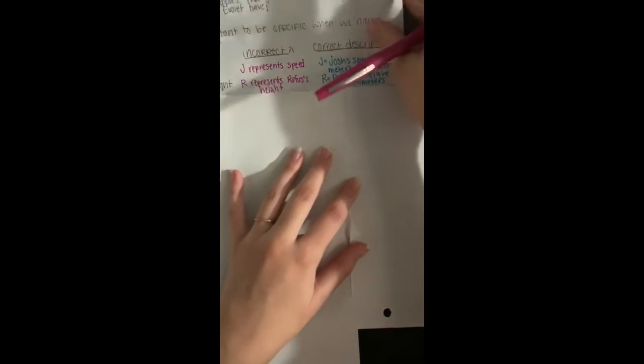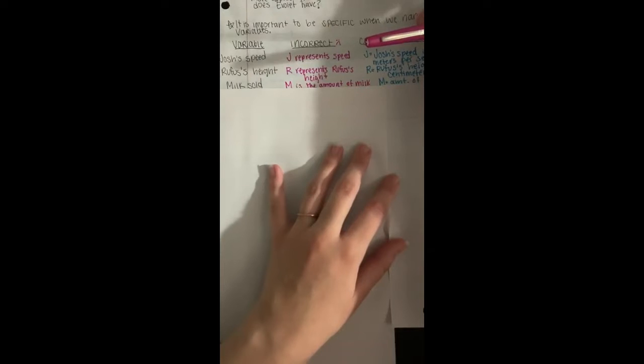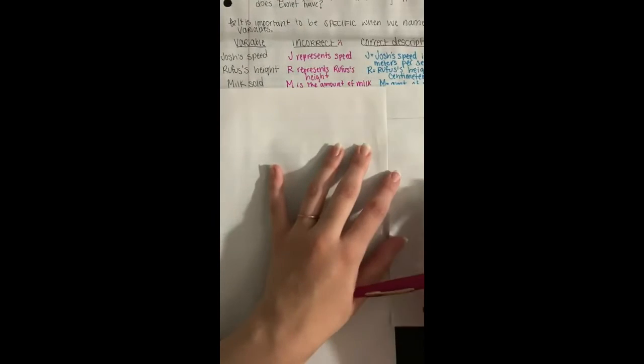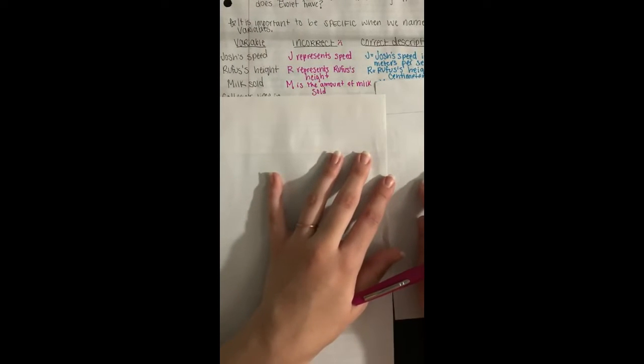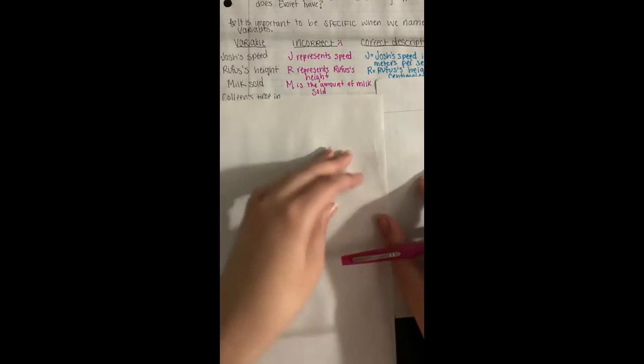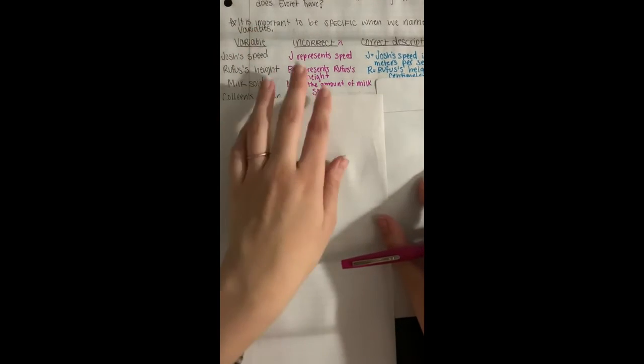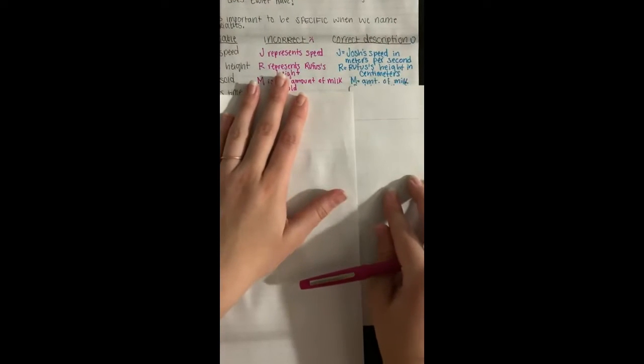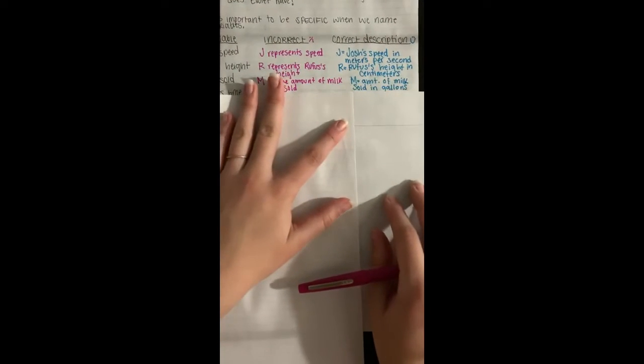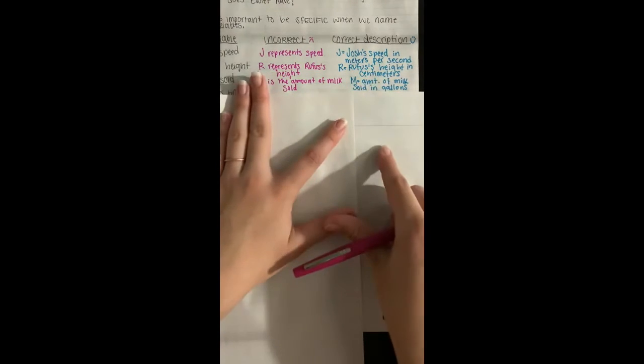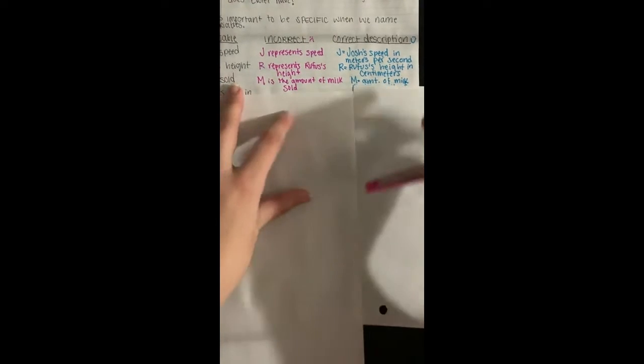Okay, for the next one we have milk sold. So it's not enough to just say M is my variable and it is the amount of milk sold. Well, is it in pints? Is it in gallons? We should say M is the amount of milk sold in gallons. That's more specific than just the amount of milk sold.